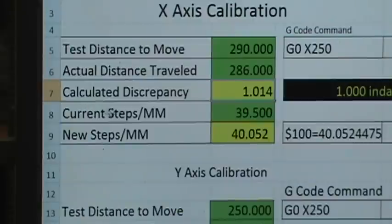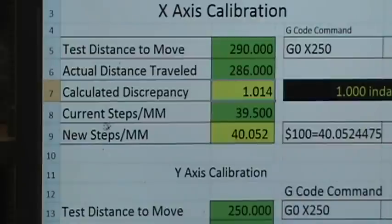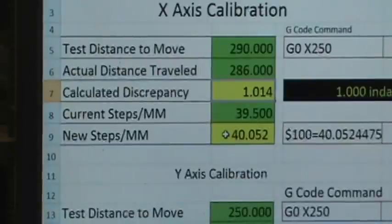And the current steps per millimeter is 39.5. That's the number that we got from Universal G-code sender when we entered that dollar sign dollar sign command and looked at the value of 100. So 100 equals 39.5. So anyway, we're going to leave that in there right there, and then it calculated discrepancy right here. And then right here at the bottom, it says new steps per millimeter. So according to this, we should be putting our steps per millimeter at 40.052. So you should write that down somewhere, 40.052.